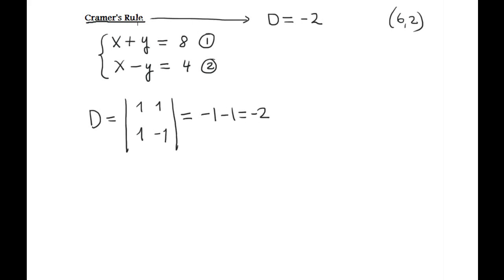Now Cramer's rule finds also Dx. What is Dx? It's another determinant. This format - when you replace the column of the x for the right-hand side numbers and the rest stays the same.